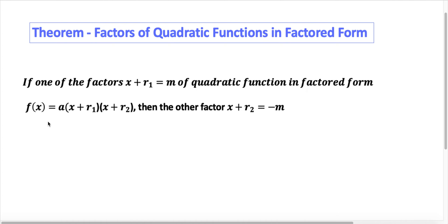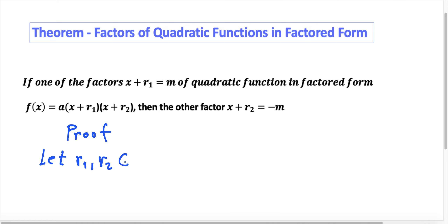But first of all, let's prove it. Let me take a pen and let's prove it. Let r1 and r2, the roots, be elements of the integers, and let m and x be elements of the rational numbers Q.